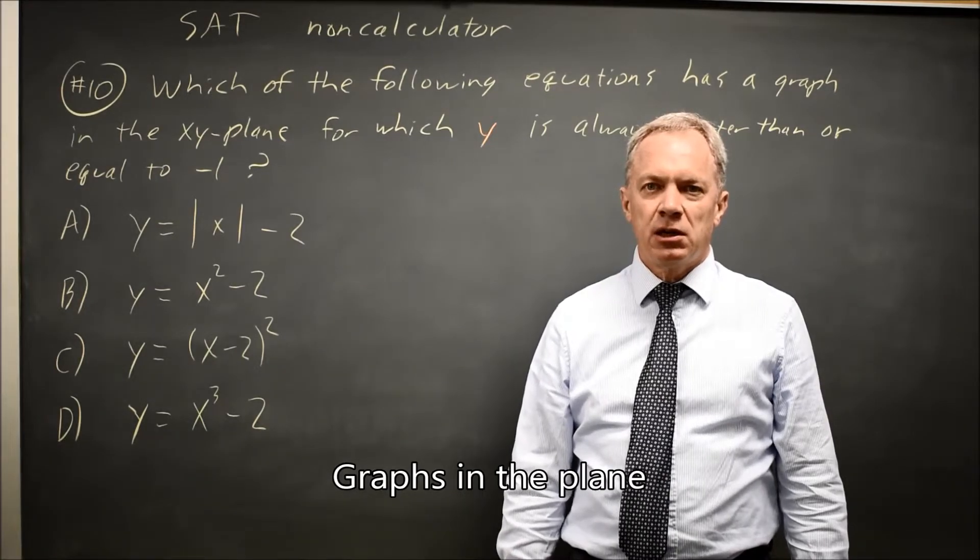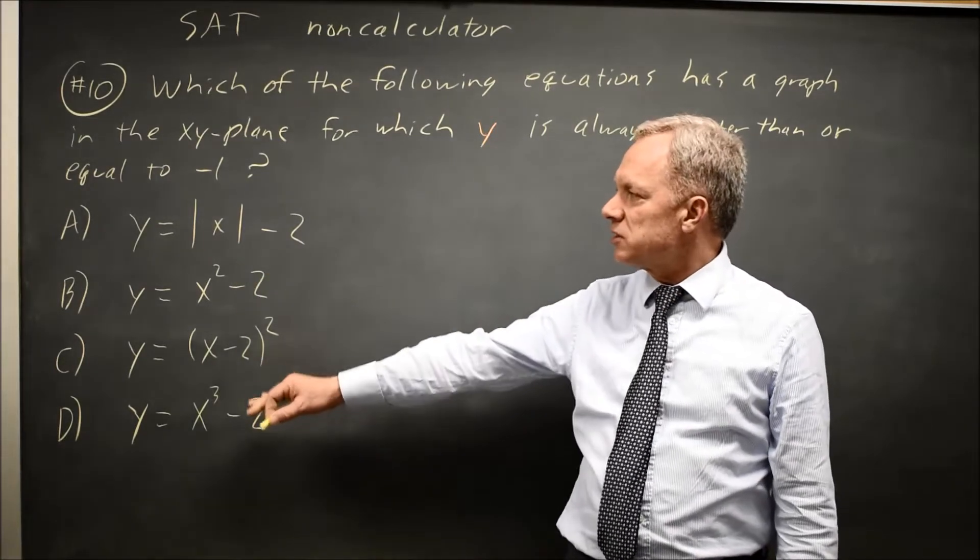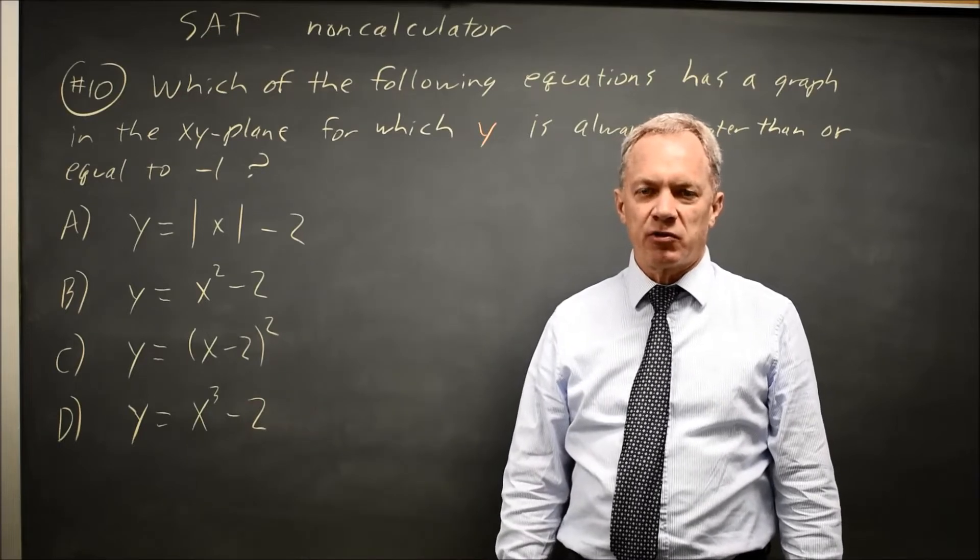This is non-calculator question number 10. College Board asks which of these four choices has a graph that's always greater than or equal to negative 1.